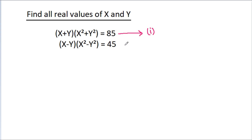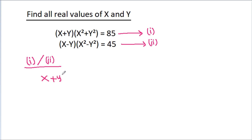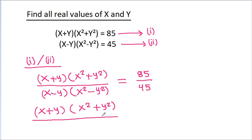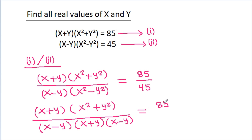Suppose this is equation 1 and this is equation 2. If we divide equation 1 by equation 2, then (x+y)(x² + y²) divided by (x+y)(x² - y²) is equal to 85 by 45.